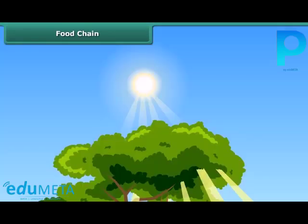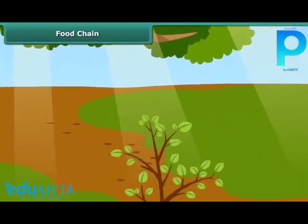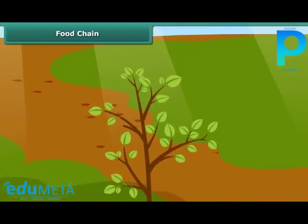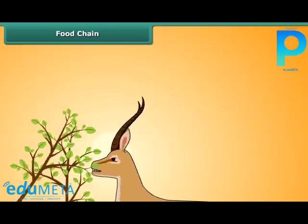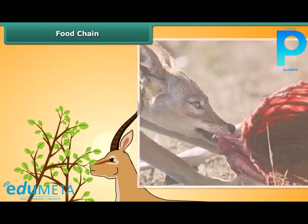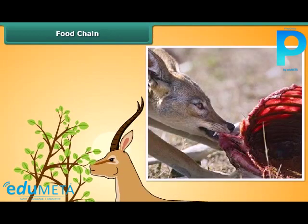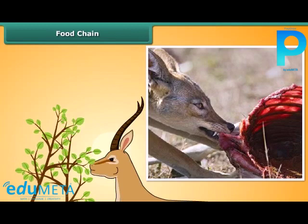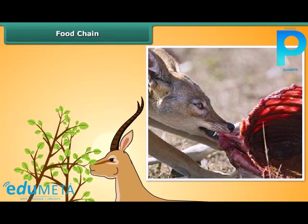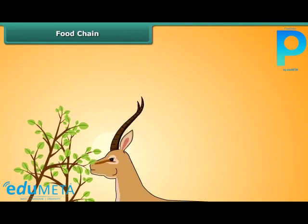The sun is the principal source of energy. The plants are the producers, as they manufacture their own food with the help of sunlight. The animals are the consumers. Animals can be plant-eating herbivores or flesh-eating carnivores. Animals can also be omnivores, consuming both plants and other animals. Let us take a simple example of a food chain: plants use sunlight and prepare food, plants are eaten by deer, and deer are eaten by lions.